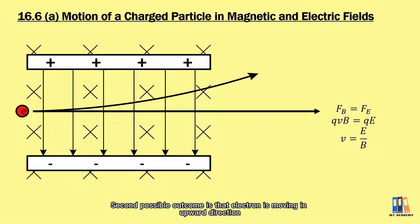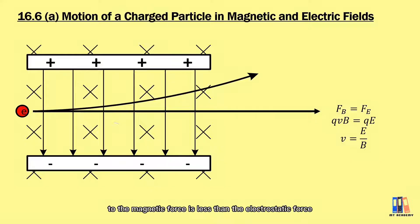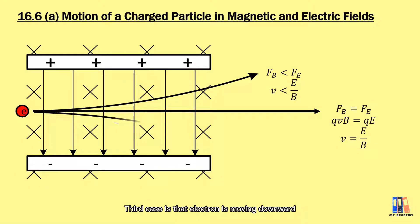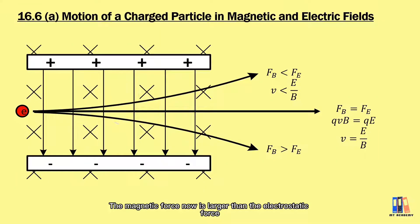The second possible outcome is that the electron moves in an outward direction. This is because the magnetic force is less than the electrostatic force, and substituting both formulas, we obtain that the velocity of the electrons moving outward is less than the ratio of E to B. The third case is that the electron moves downward, opposite to the second case — the magnetic force is now larger than the electrostatic force, so the velocity of the electrons is greater than the ratio of E to B.